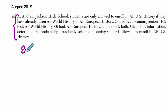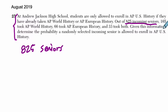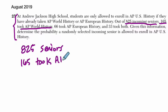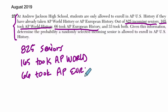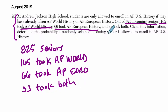There are 825 seniors — write that down, it helps to think about the problem. 165 took AP World History, 66 took AP European History, and 33 took both.